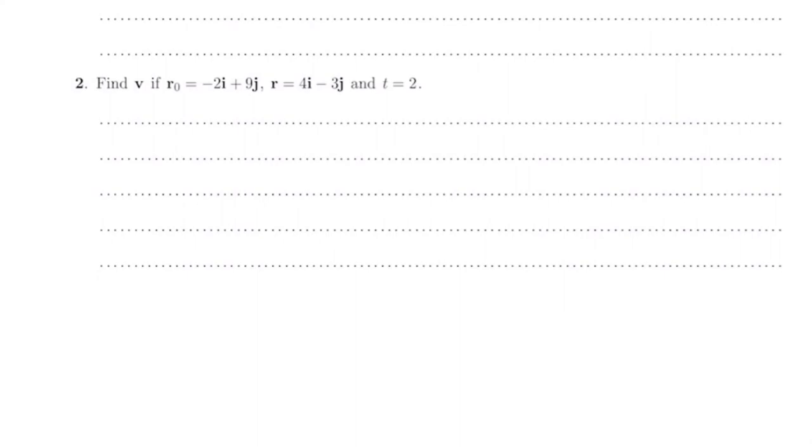It says find v if r₀ is the vector minus 2i plus 9j, r is 4i minus 3j, and t is 2. I'm going to start with the formula. So r equals r₀ plus vt. I'm going to put in what I know: r is 4i minus 3j, that equals r₀ which is minus 2i plus 9j plus vt, so that's 2v.